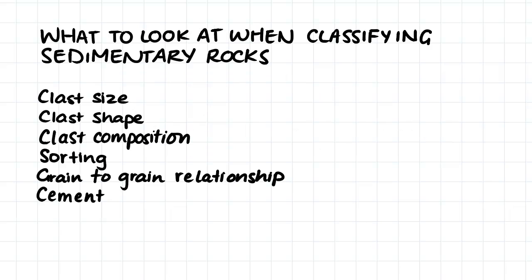So what do we look at when we're classifying sedimentary rocks? First we look at clast size, which is the size of the grains that make up our sedimentary rock. Then we look at clast shape, which is the shape of all the grains that make up our sedimentary rock. We also look at clast composition — what material makes up our clast that then makes up our rock.